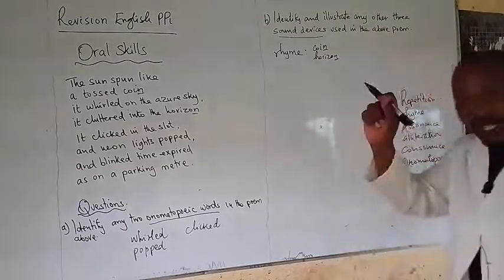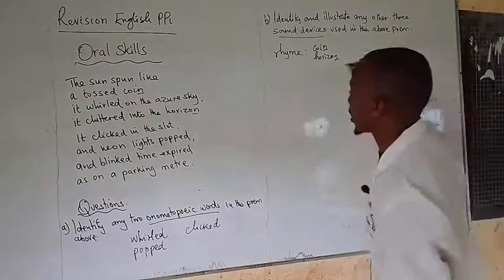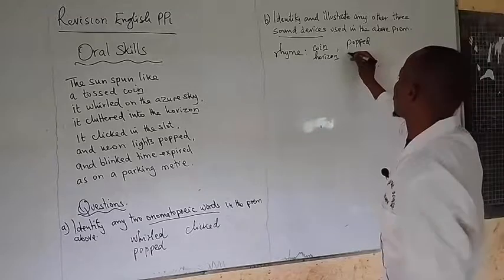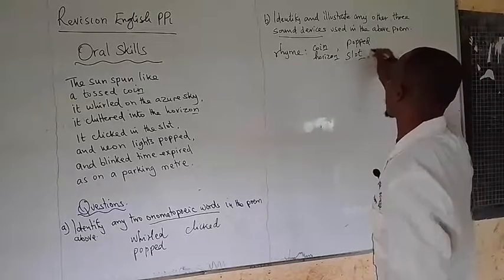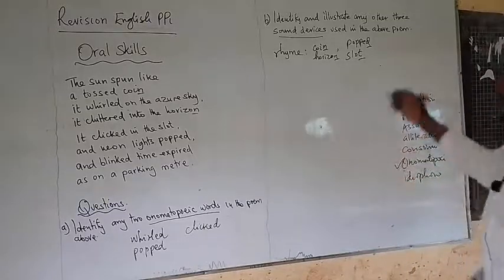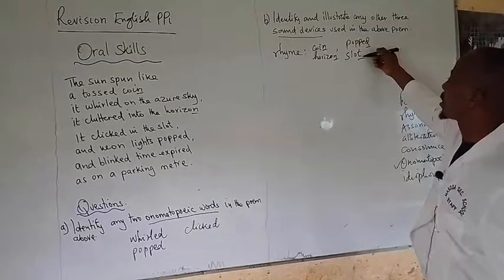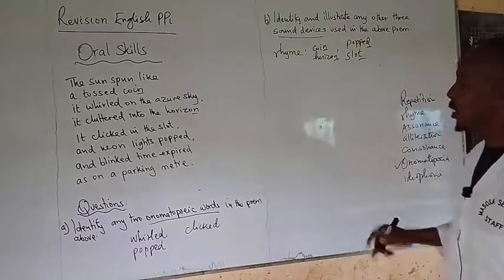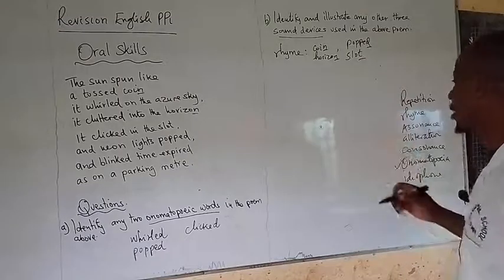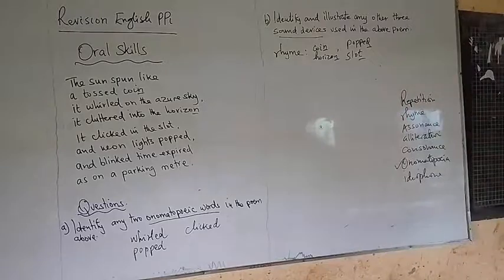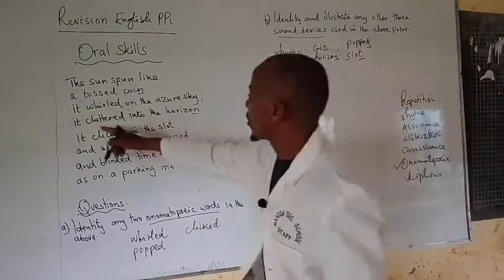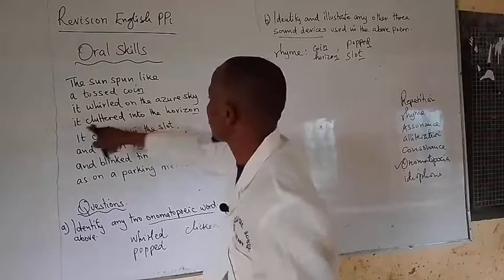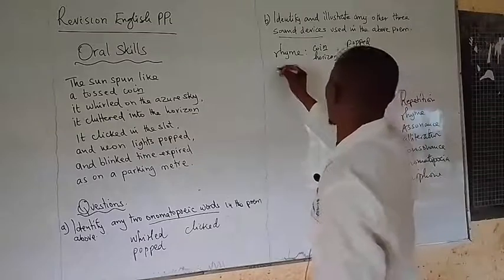All of them are having the 'n' sound at the end of the lines. And then we have another case there — 'popped' and 'slot.' This one also needs a lot of careful attention. You notice that they are very different: 'popped' is ending in letter d, 'slot' is ending in letter t, but all of them are pronounced as 'ta.' So 'popped' and 'slot' is giving us that. So we have rhyme as one of the sound devices in this particular poem. And then we have 'it,' 'in,' 'horizon' — the 'ee' sound is giving us what we call assonance.